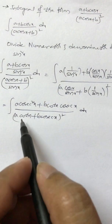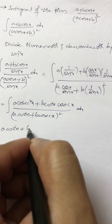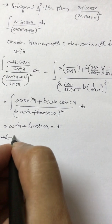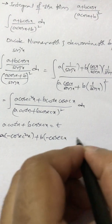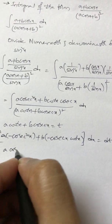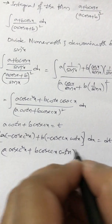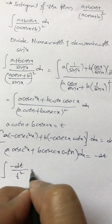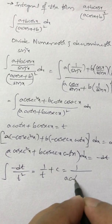If you observe the numerator, it is nothing but the differentiation of the denominator. Let t = a cot x + b cosec x, so dt = −(a cosec²x + b cosec x cot x) dx, which means dx = −dt. So the integral becomes −dt / t², which gives 1/t + c.